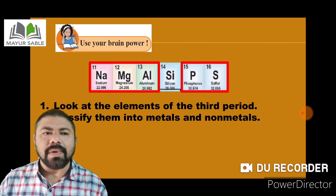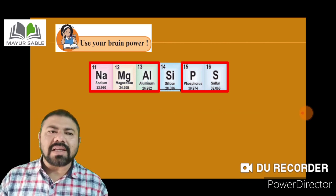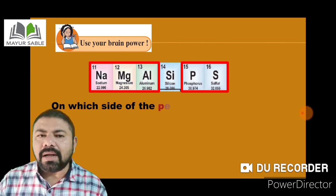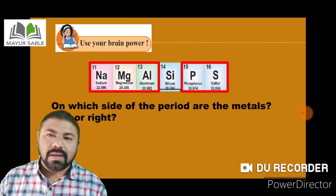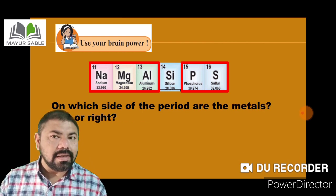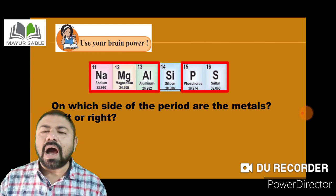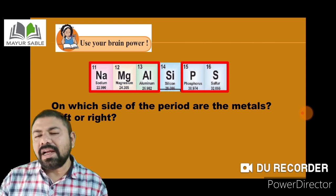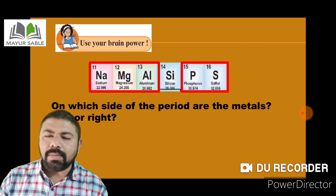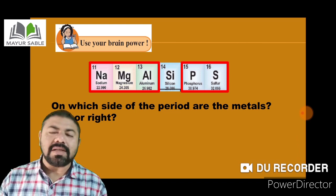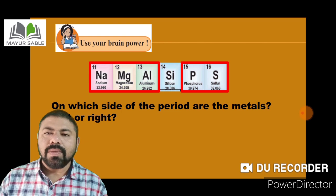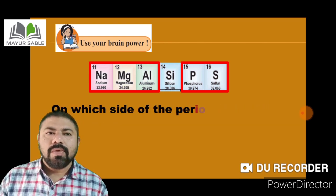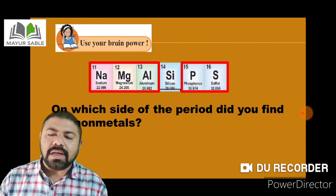The next question asks: on which side of the period are the metals? The metals are on the left side of a modern periodic table in every period. The non-metals are on the right side of the modern periodic table in every group.